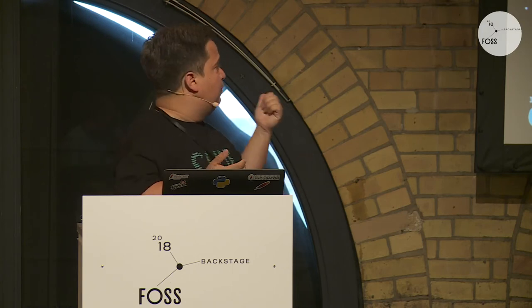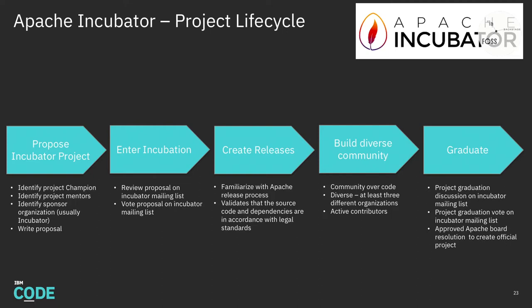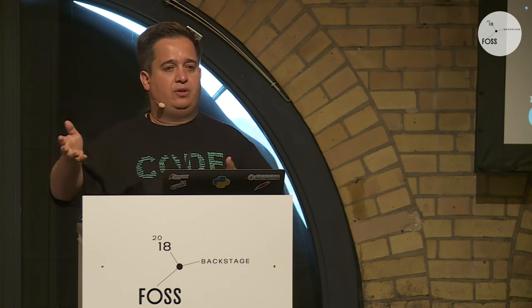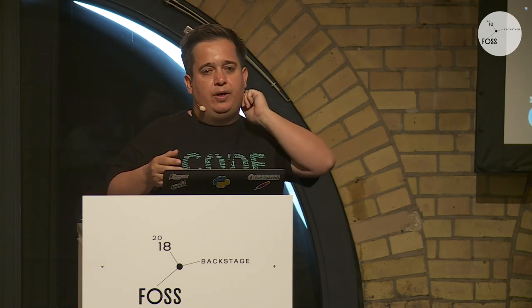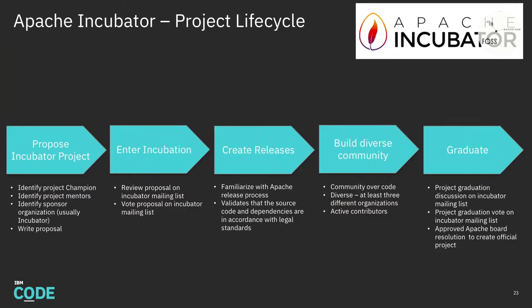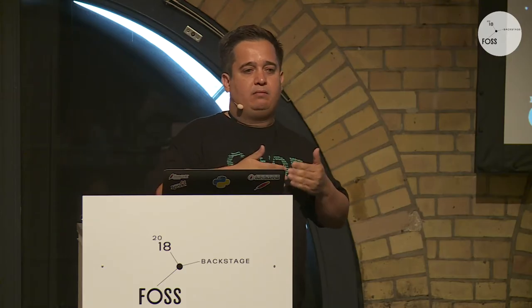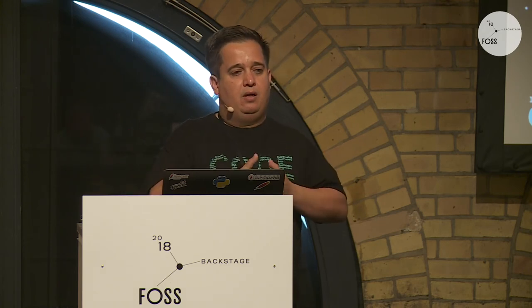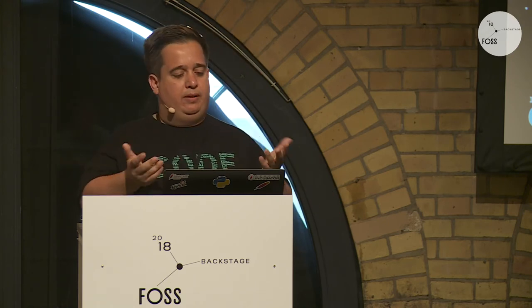The incubation lifecycle goes: proposed incubator project → enter incubation → create releases → build diverse community → graduate as a Top-Level Project (TLP). If all criteria are met, you graduate as an official Apache project. If not, a project may be retired or not graduate.